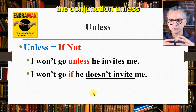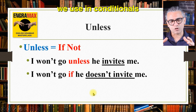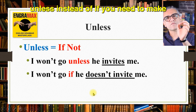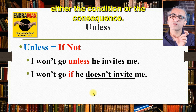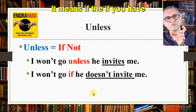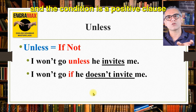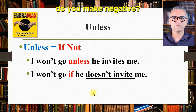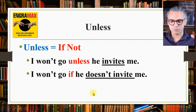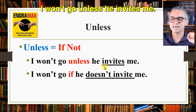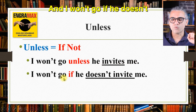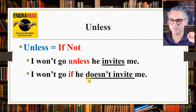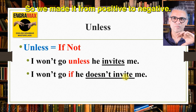Our next point is about the conjunction 'unless'. Unless is another conjunction we use in conditionals. Unless means 'if not'. If you use 'unless' instead of 'if', you need to change the polarity of either the condition or the consequence. Example: I won't go unless he invites me — and this is equivalent to: I won't go if he doesn't invite me. We removed 'unless', used 'if', and changed 'invites' to 'doesn't invite' — making it from positive to negative.